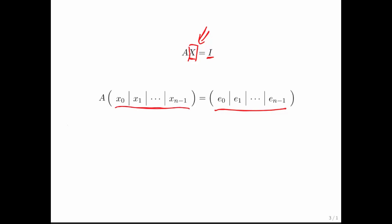And we know that if we partition the identity by columns, then A times the columns of X must be the columns of the identity. And therefore, in order to compute the jth column of the inverse, what you want to do is solve with the jth column of the identity.